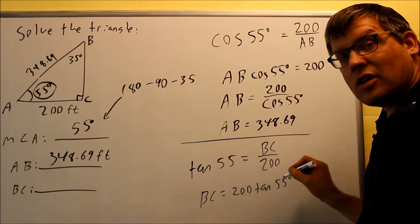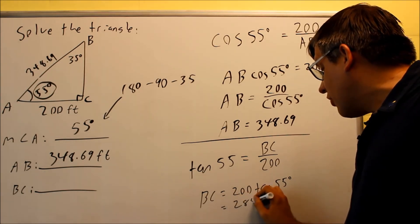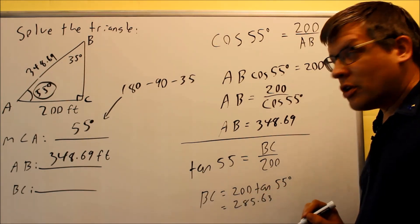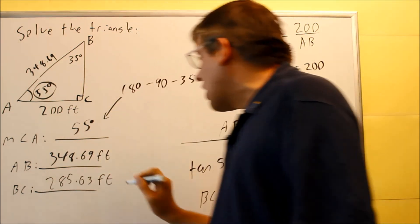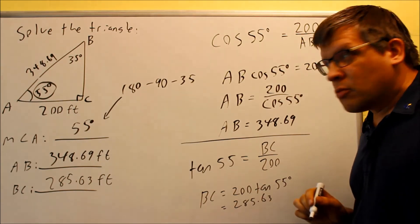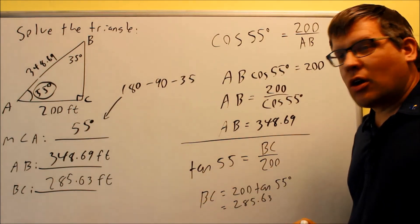If I put that into my calculator, making sure I'm in degree mode, the answer I should get is 285.63. That's going to be my BC, 285.63, also in terms of feet. We've solved the triangle, we've found all the missing sides and all the missing angles.